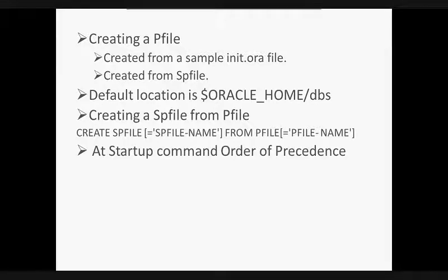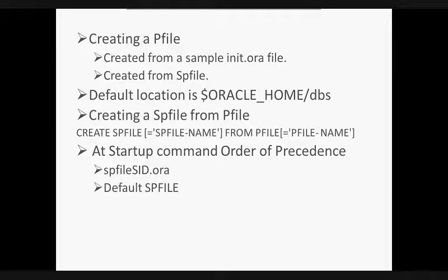Whenever we start an instance, it reads the initialization files in the following order. First it reads spfile-sid.ora. If this file is not found, then it reads spfile.ora, which is the default spfile for an instance. If that is also not configured, then it reads init-sid.ora, and if that is not found, it uses the default pfile.